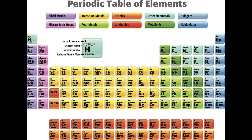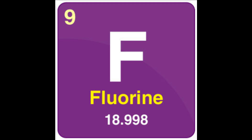Halogens are a group of elements found in group 17 of the periodic table. They include fluorine, symbol F, the most electronegative element known for its high reactivity.